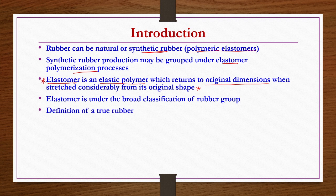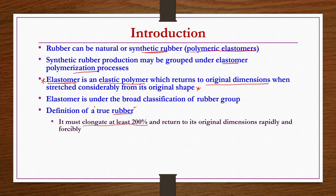The definition of true rubber is very important. True rubber must elongate at least 200 percent and return to its original dimensions rapidly and forcibly. Only then can we call that material a true rubber. If it is not coming back to its original dimensions rapidly and forcibly, it cannot be considered a true rubber — it may be counted as a partial rubber only.